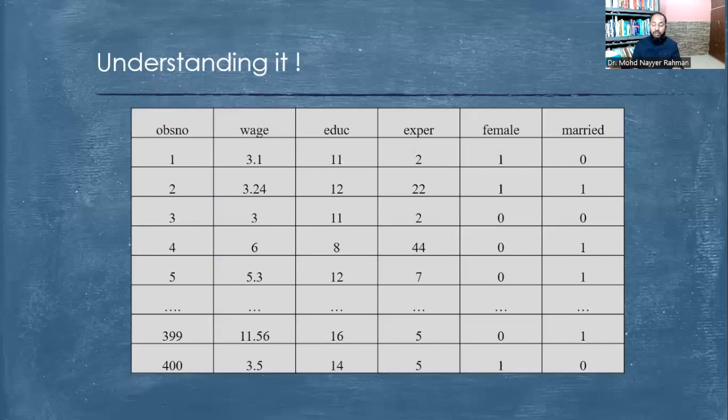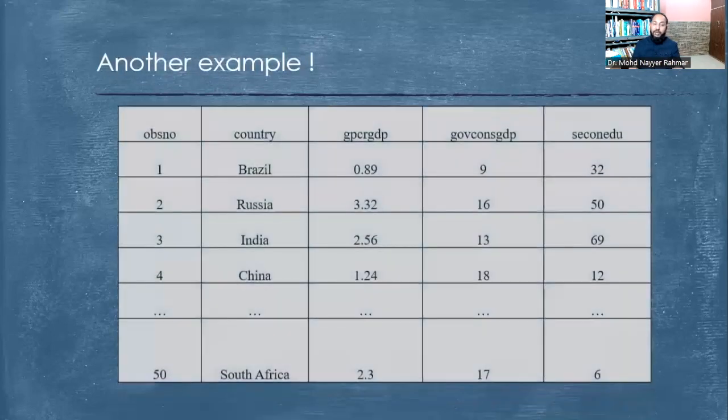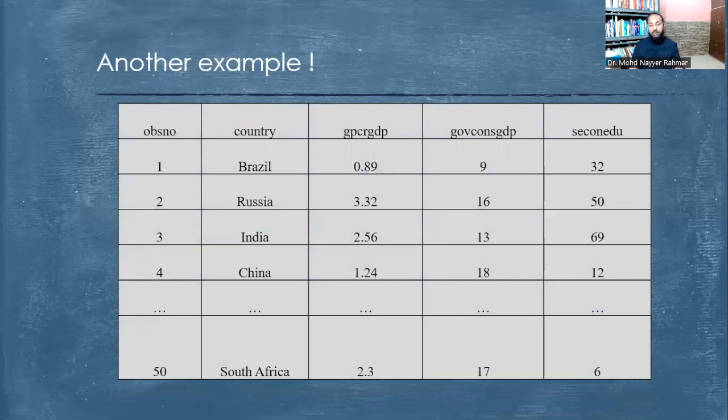We can take another example also. We have observations - now instead of people, we can say countries are there: Brazil, Russia, India, China. Each country cannot be repeated, so one country at one time will be equivalent to one observation. Then we have their GDP, their governance indicators divided by GDP, and we have other variables also. All these will be for again one point of time - it can be a year. So in 2010, what is the GDP for Brazil, what is the GDP for Russia, what is the GDP for India - this is again an example of cross-sectional data.